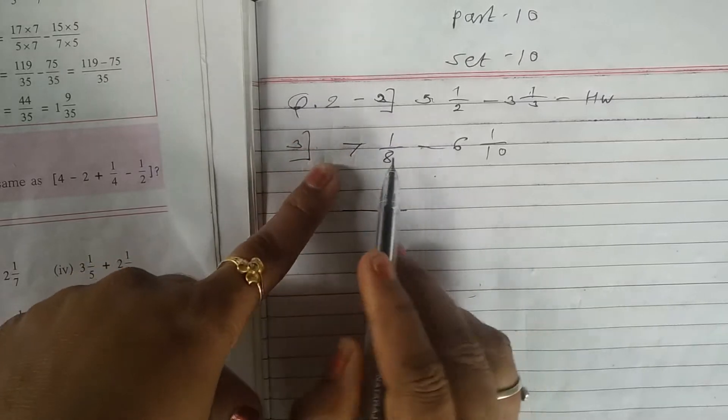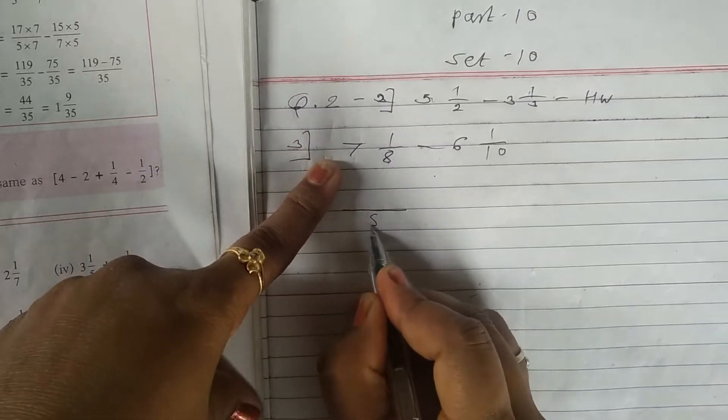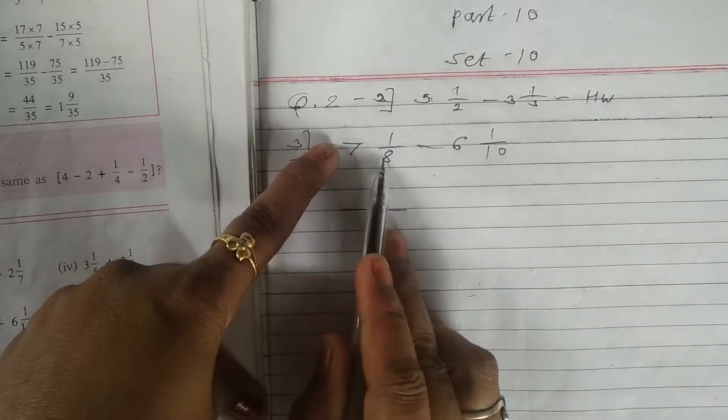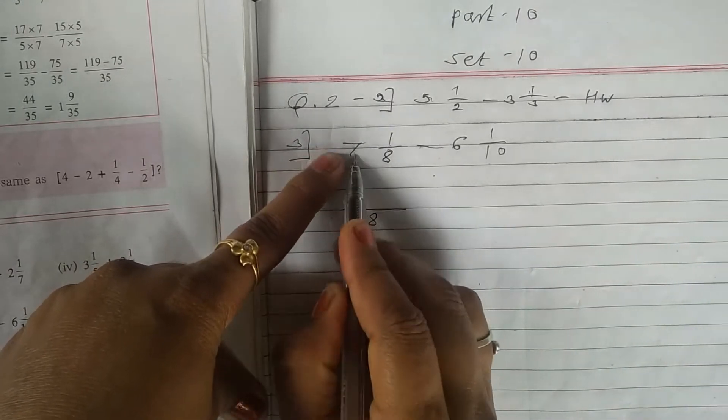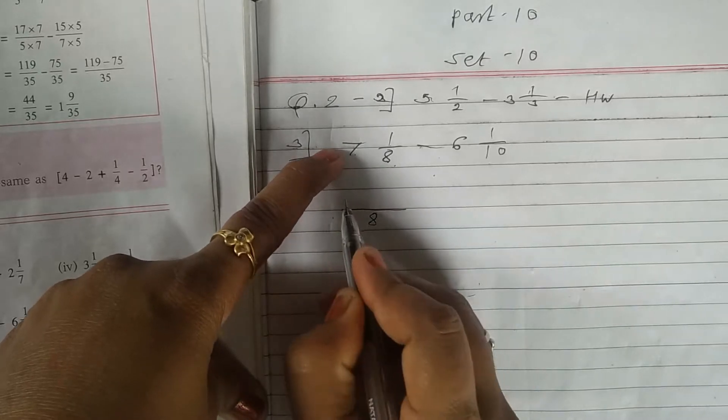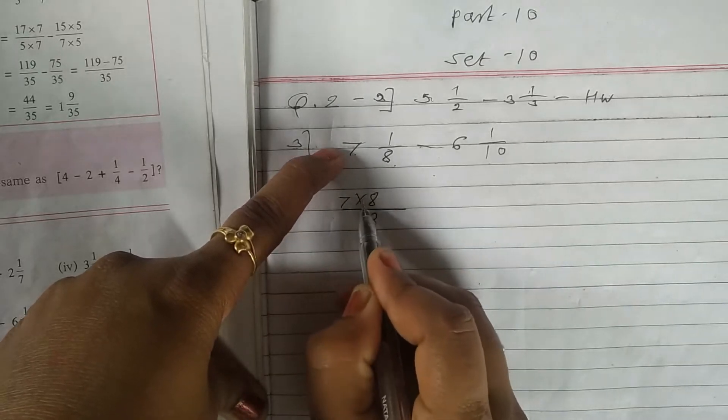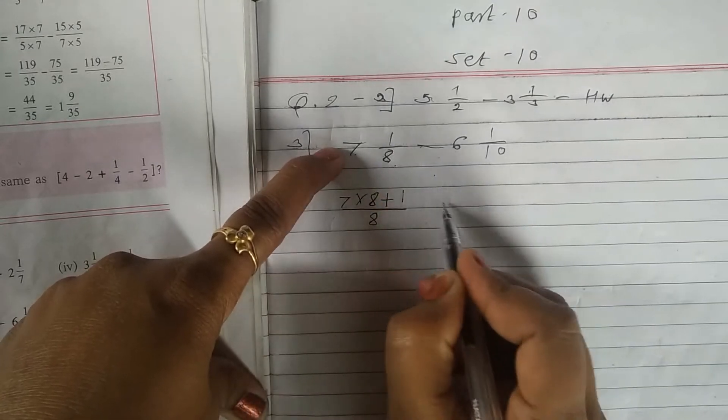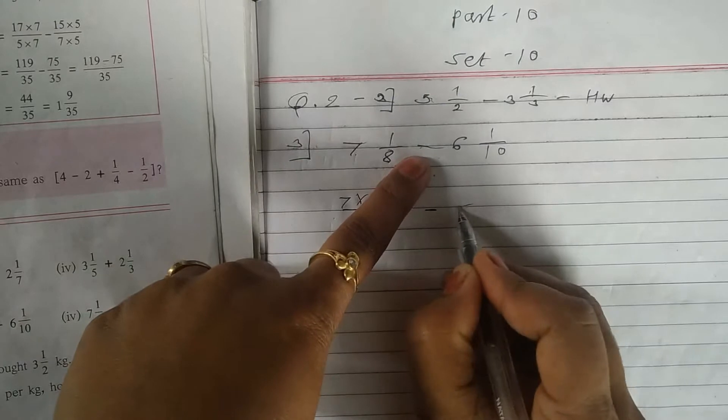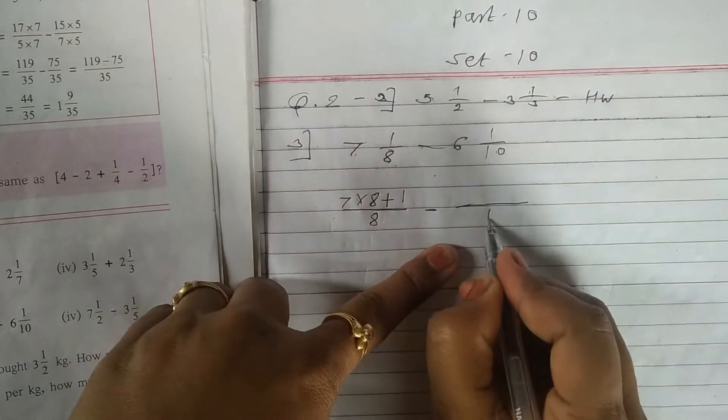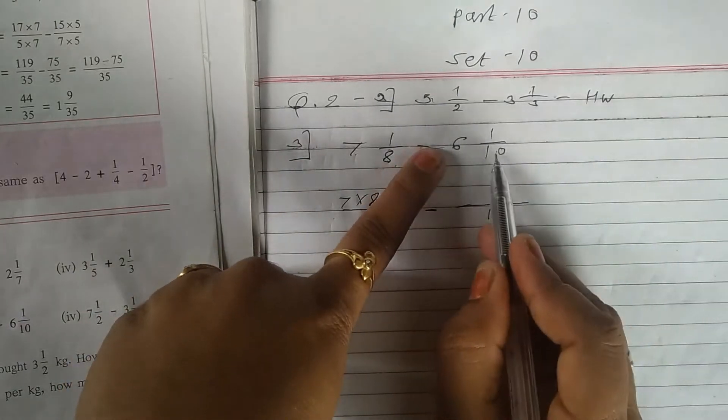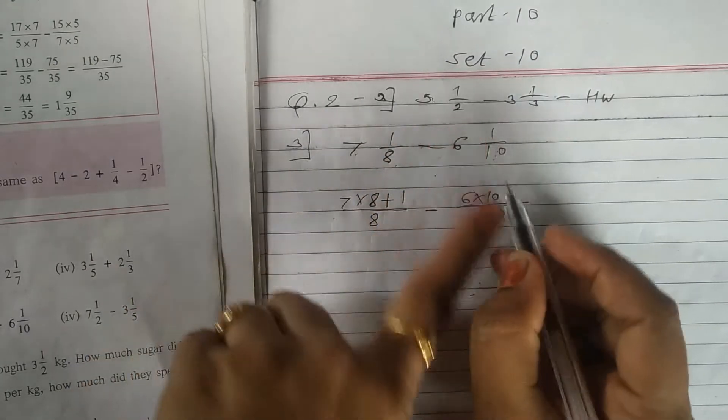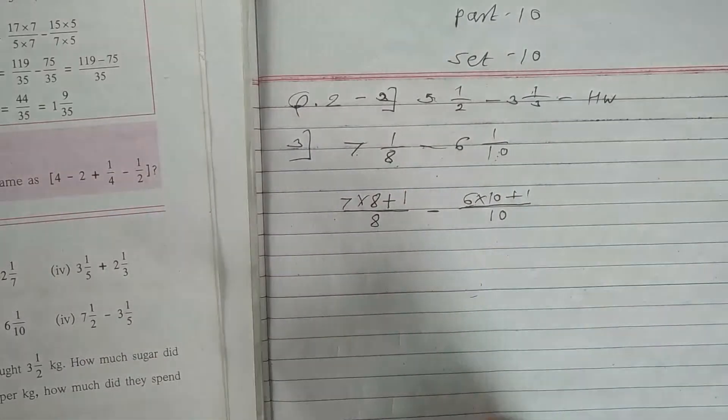For that take this denominator as it is down. Proper attention. Multiplication of these 2 numbers which is here and denominator 7 multiply by 8 plus upside digit as it is here plus 1. Middle sign minus same procedure. Downside denominator 10 as it is 6 multiply by 10 plus 1.